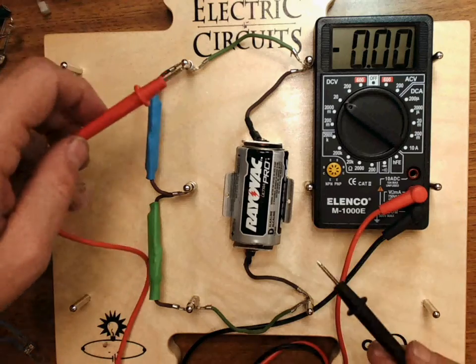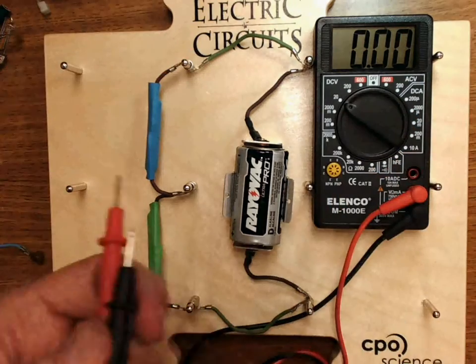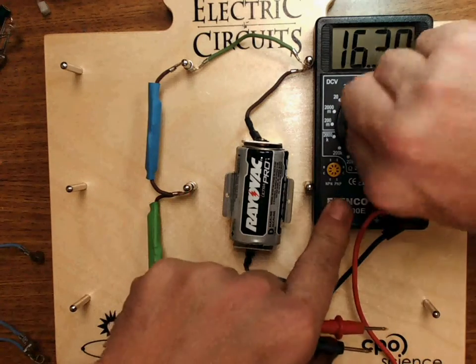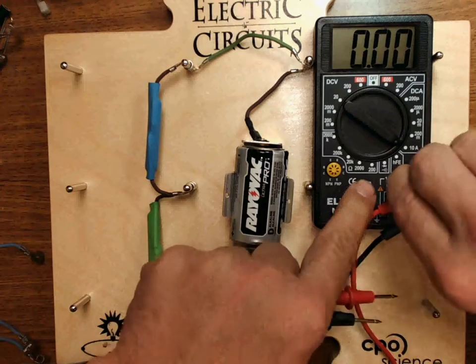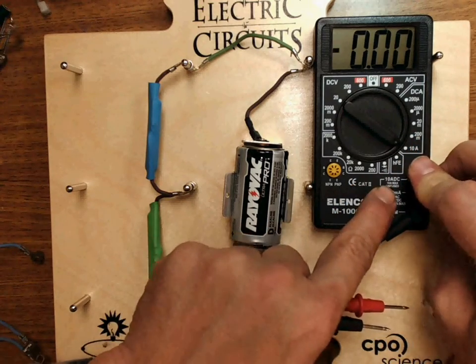Now, current is different. Current, we must be in the circuit. So, the circuit has to be completed by going through the meter. So, the first thing I'm going to do is set the meter to 10, and I'm going to move the positive lead up to where it says 10, right here.